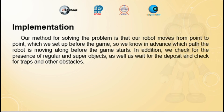Our method for solving the problem is that our robot moves from point to point, which we set up before the game, so we know in advance which path the robot will move along. In addition, we check for the presence of regular and super objects, as well as wait for a deposit and check for traps and other obstacles.